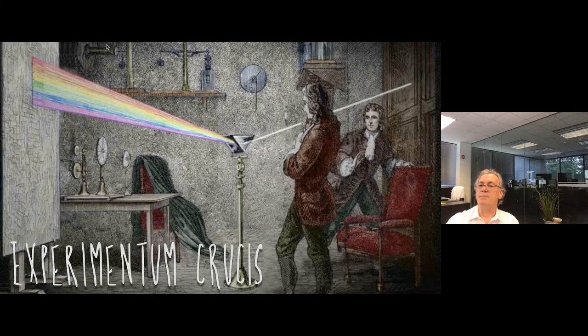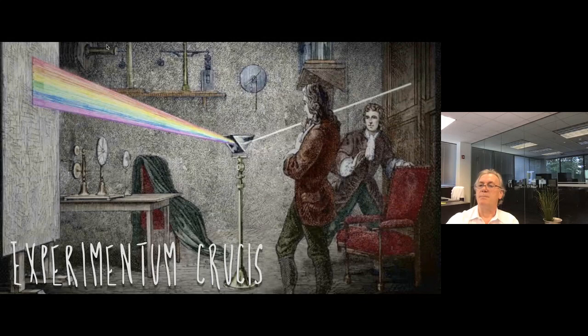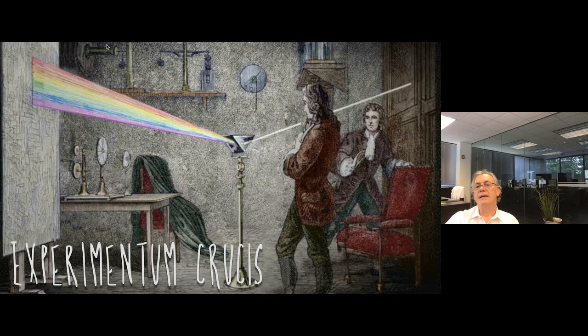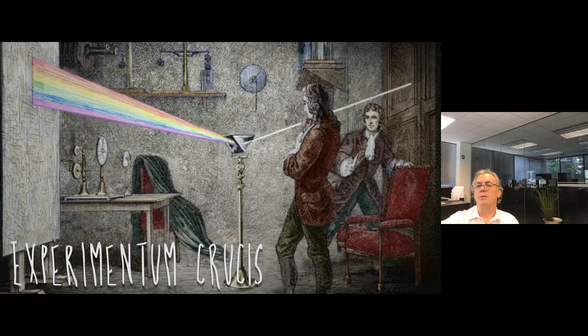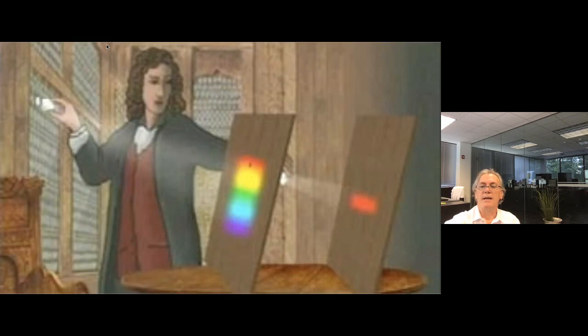He performs his experimentum crucis and defines the exact relation between light and color. By integrating a second prism, he lets only one beam of light from that spectrum shine and project it on another wall. And he notices that the angle of refraction of both the first and second light are basically the same, confirming that color is in light.